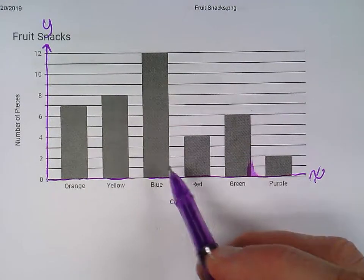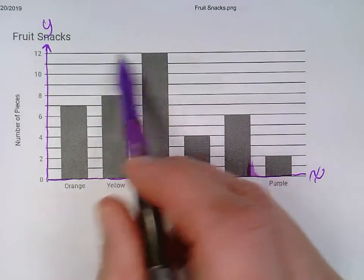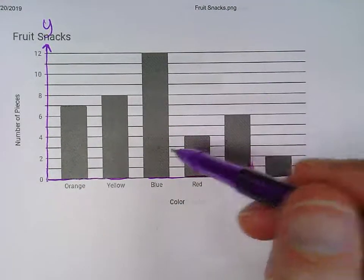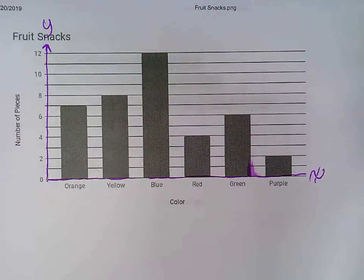So there's been 12, if I go over to my y-axis, I see there's been 12 pieces of blue candy, or fruit snacks, that have been received.